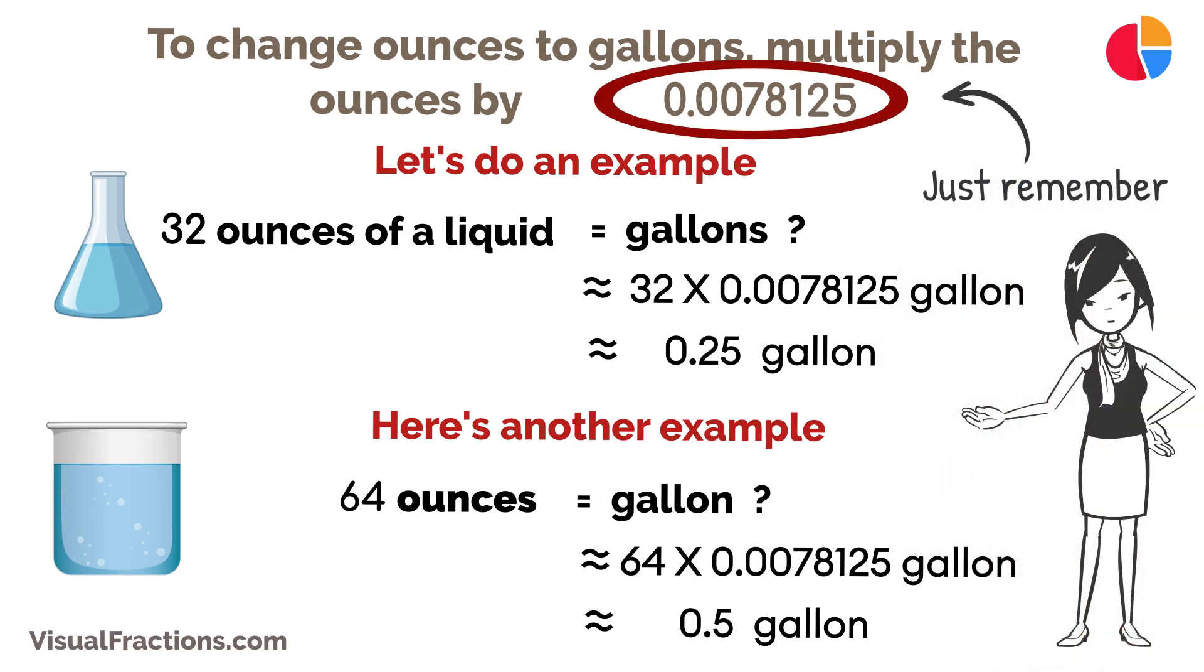That's all you need to know. Just remember, one ounce is 0.0078125 gallons. With a little bit of practice, converting ounces to gallons will be easy and you'll always get your measurements right.